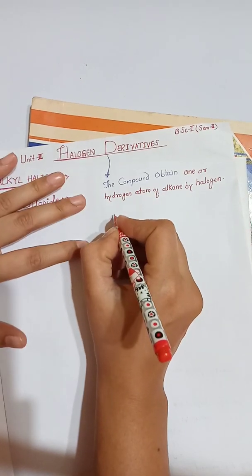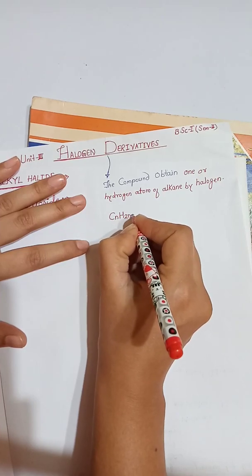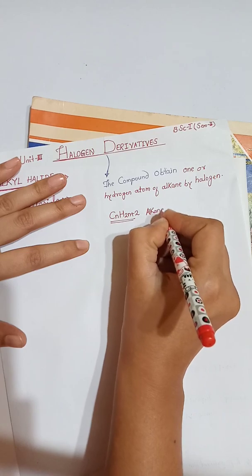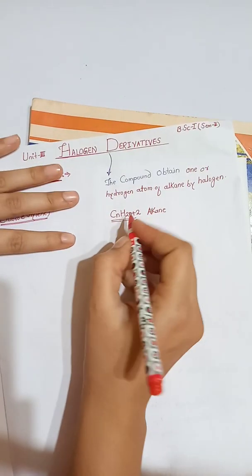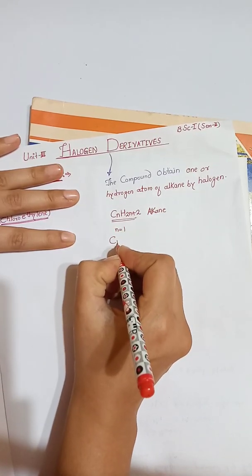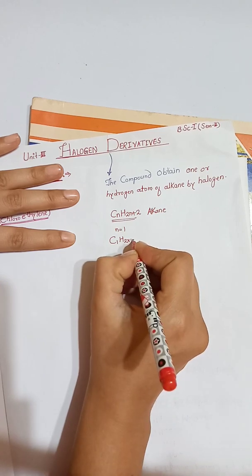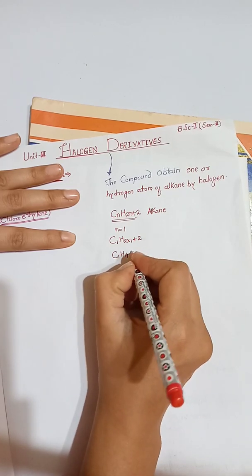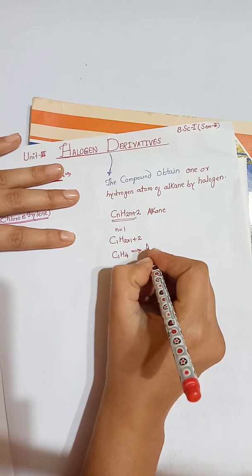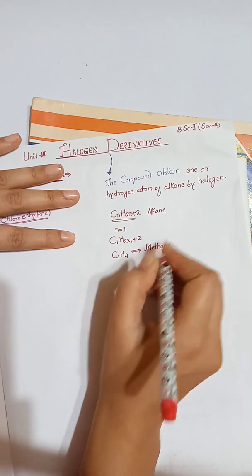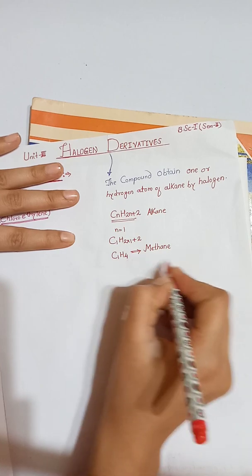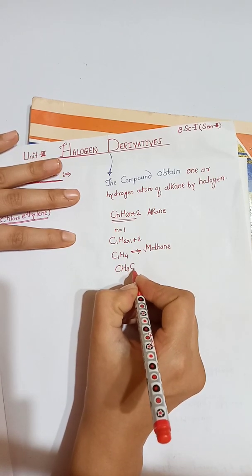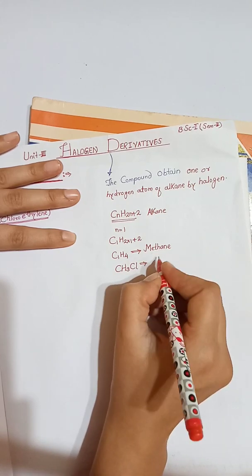The general formula of alkane is CₙH₂ₙ₊₂. Suppose we have n = 1, that gives us C₁H₄, which is CH₄ — methane. If we replace one hydrogen atom of methane by a halogen atom, suppose we replace one hydrogen atom by a chlorine atom, the name of this compound is methyl chloride.